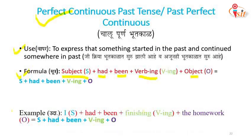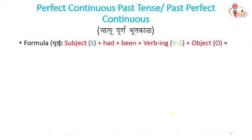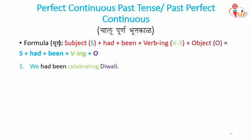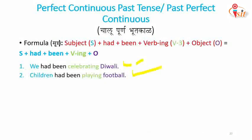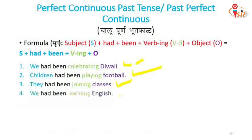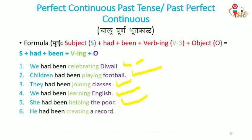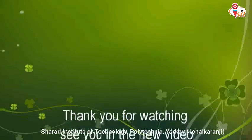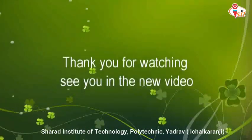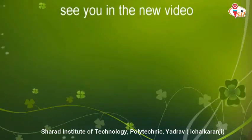Let's look at examples. I had been finishing the homework. I had been celebrating Diwali. Children had been playing football. They had been joining classes. We had been learning English. She had been helping the poor. He had been creating a record. Sachin had been scoring a hundred.